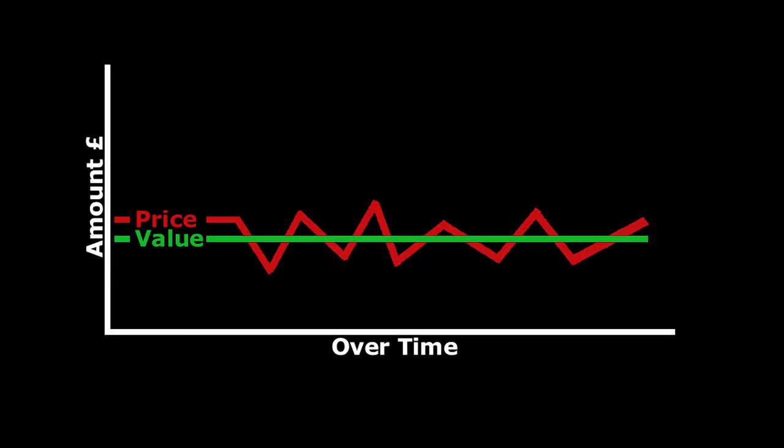If we remember back to chapter 3, where we first discussed price, we saw how it's only ever a monetary representation of value. And while Marx is assuming that price and value are equal for his analysis throughout Capital, we are reminded here that this is not always the case in the real world.